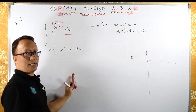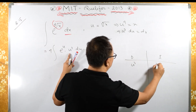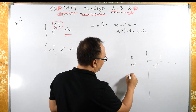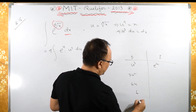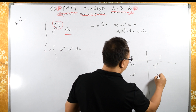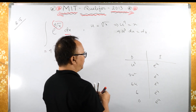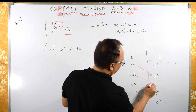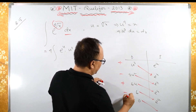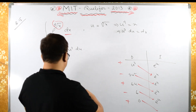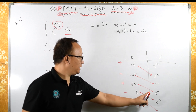In the D column I write u cubed. Differentiating: 3u squared, then 6u, then 6, then 0. The integration column for e raised to u doesn't change. Now we multiply diagonally with alternating plus-minus signs: plus, minus, plus, minus.